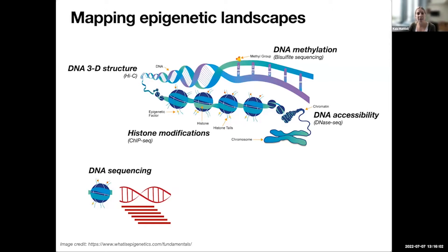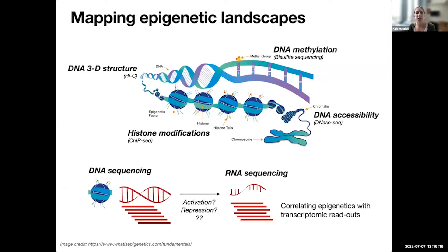By aligning the resulting DNA sequencing reads to the genome across many, many samples, you can get a feel for how things like DNA accessibility or histone modifications can change across different cell types. Ultimately, the question we want to ask is what effect does this DNA state — say DNA accessibility or methylation — have on gene expression? So on the act of transcription, making DNA into RNA. To begin to untangle that, we perform these types of correlative analyses where you look at the effect of DNA and RNA and try to correlate the effect of epigenetic states with transcriptomic readouts.